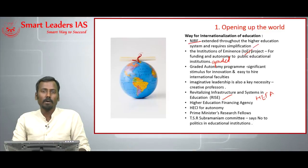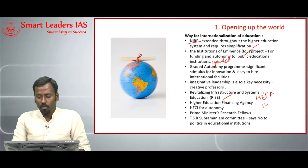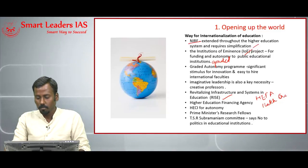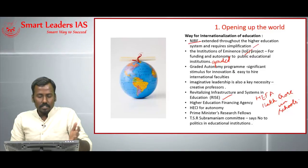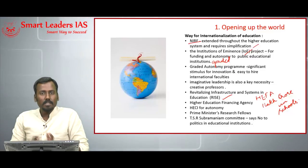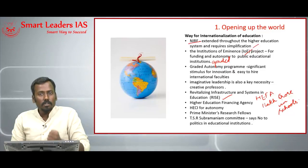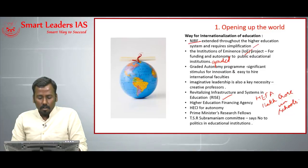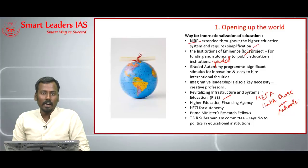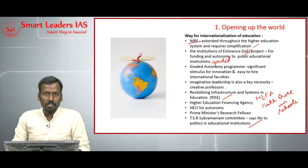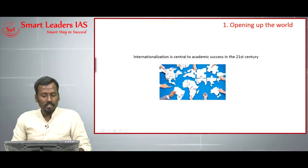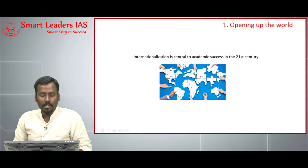There was a news item about HEFA financing around 1 lakh crore for developing infrastructure in central government schools. As discussed earlier, politicization and bureaucratization of education is pulling down the growth of the Indian educational system. The TSR Subramaniam committee in 2016 recommended completely removing politics from educational institutions. The author concludes by saying that internationalization is central to academic success in the 21st century.